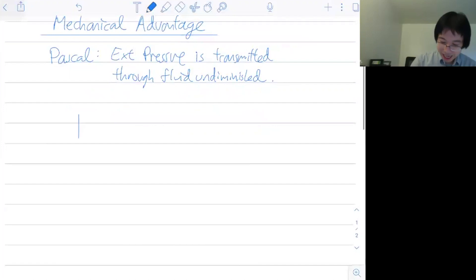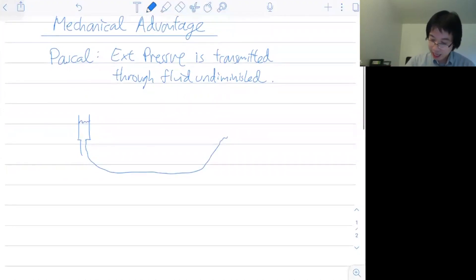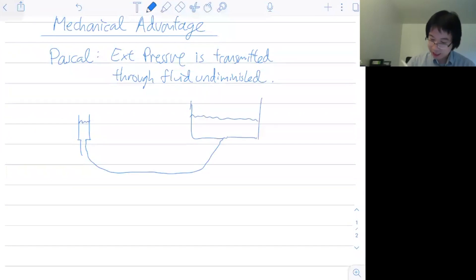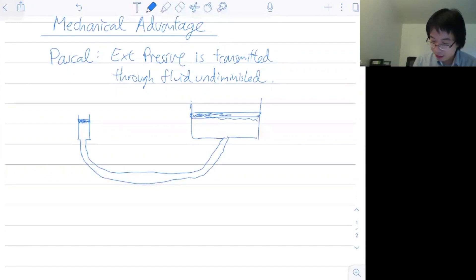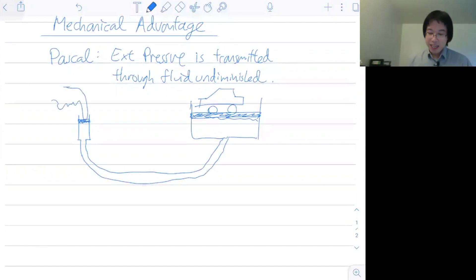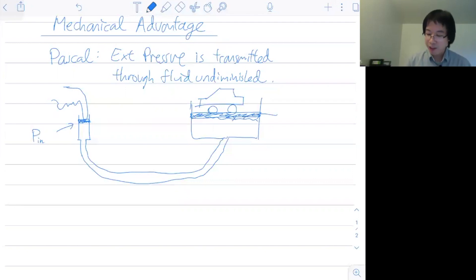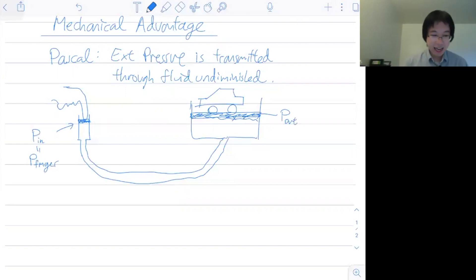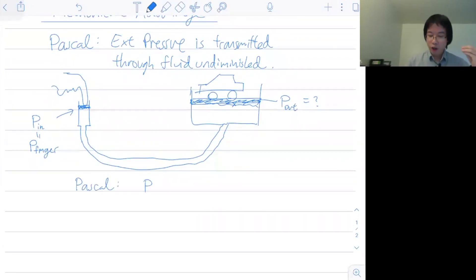Let me redraw the diagram. If I have some fluid connected by a tube to a big tank on the other side, both sides are at the same water level. I put a platform on each end. Now let's try to put a car on one end and push down with one finger on the other. The input pressure gets transmitted to the output pressure. From Pascal's principle, all your input pressure transmits undiminished, so the output pressure is identical to the input pressure — as long as both sides are at equal depth.